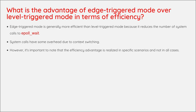What is the advantage of edge-triggered mode over level-triggered mode in terms of efficiency? Edge-triggered mode is generally more efficient than level-triggered mode because it reduces the number of system calls to epoll_wait. System calls have some overhead due to context switching. However, it's important to note that the efficiency advantage is realized in specific scenarios and not in all cases.